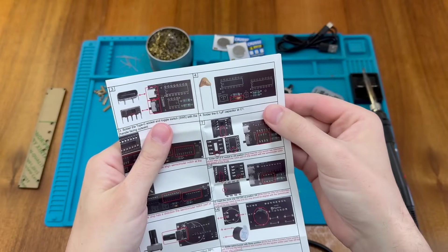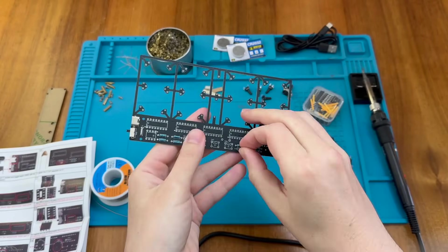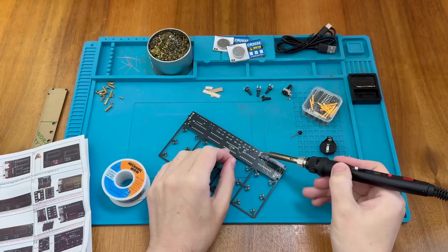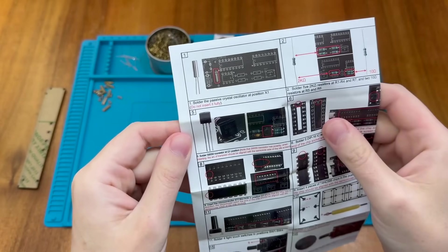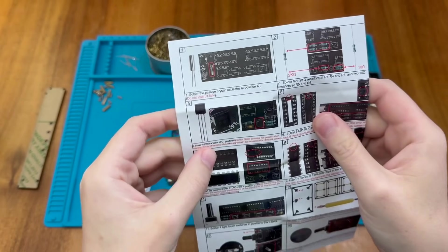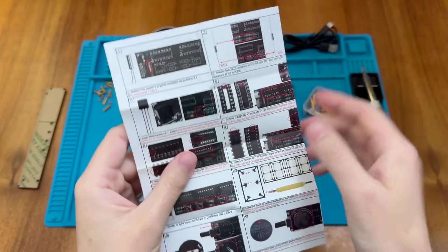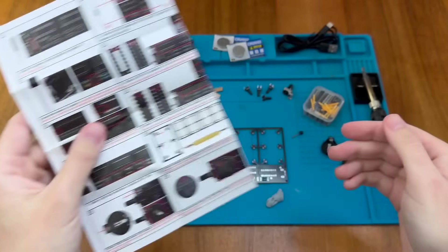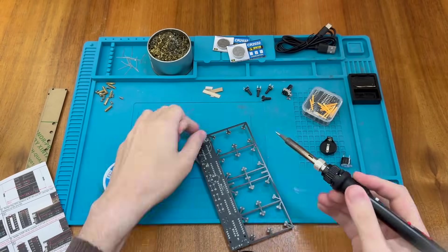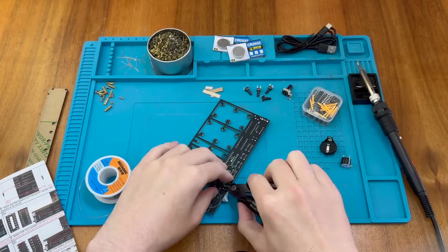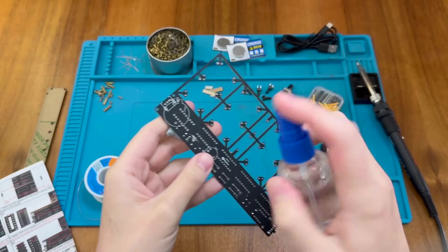Step 4 is to install that 0.1 microfarad capacitor at C1 and as you can see it's marked 104. Step 5 is to install our S8550 transistor at the Q1 position and as it highlights it's important the arc of the transistor follows the silkscreen outline. And you can see we've got quite a lot of flux residue there so I'm just going to clean that up with a little spritz of isopropyl alcohol.